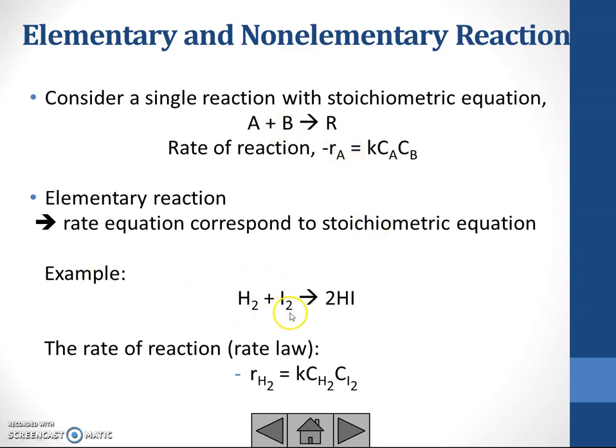For example, we have hydrogen plus iodine producing 2HI. We have 1H2 plus 1I2 producing 2HI.